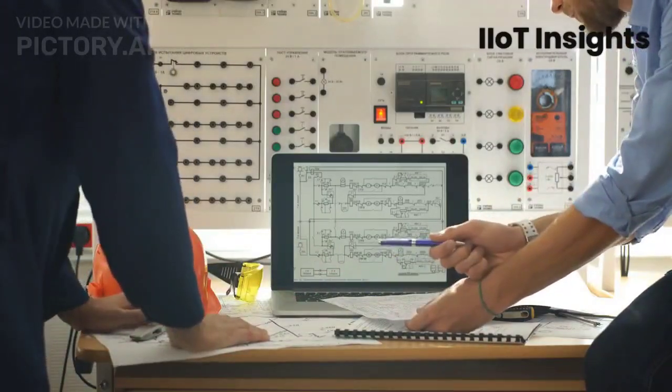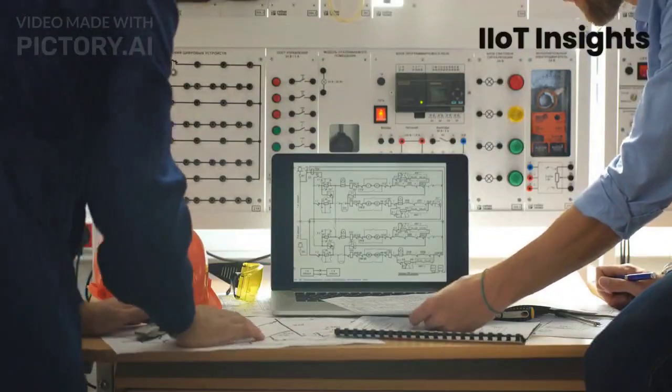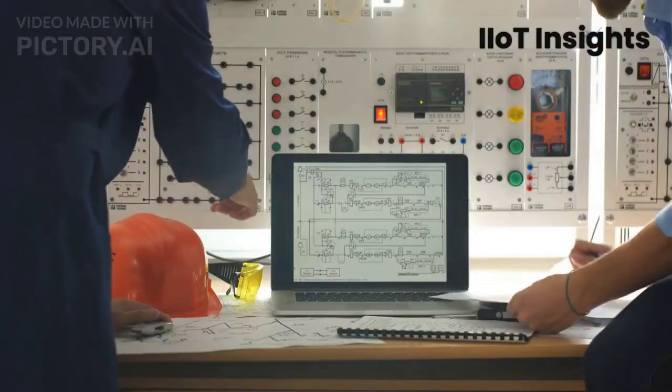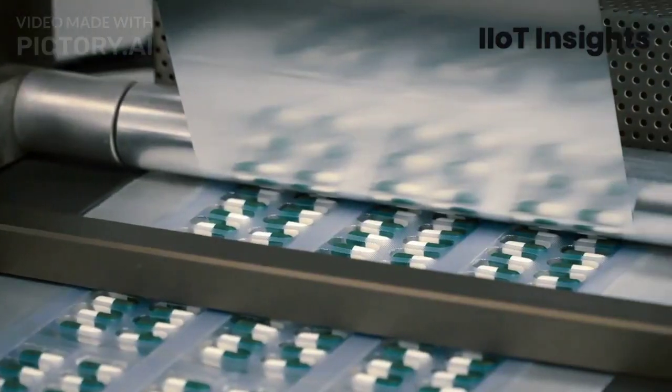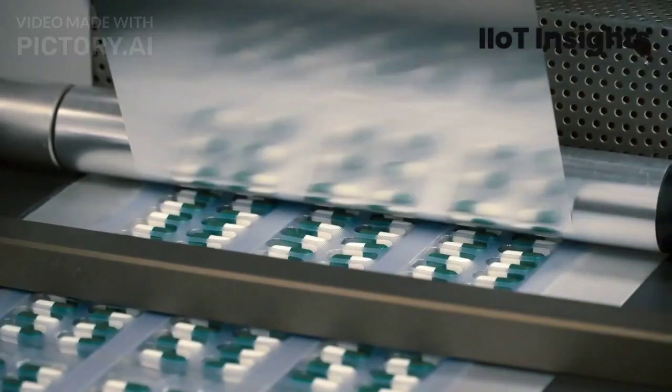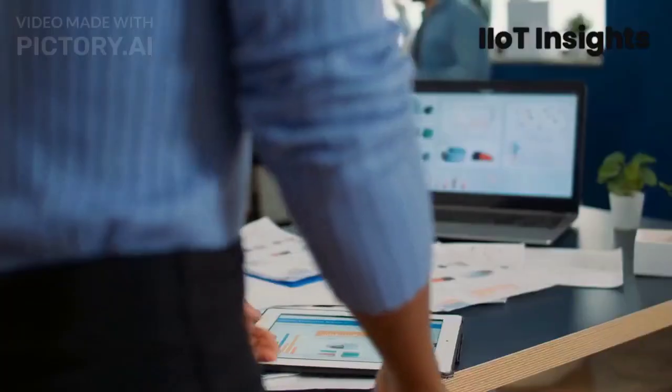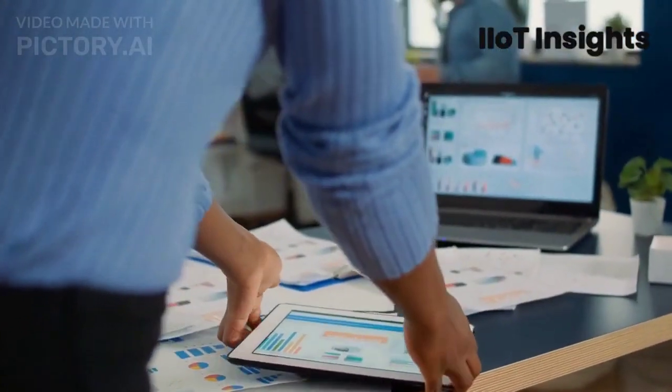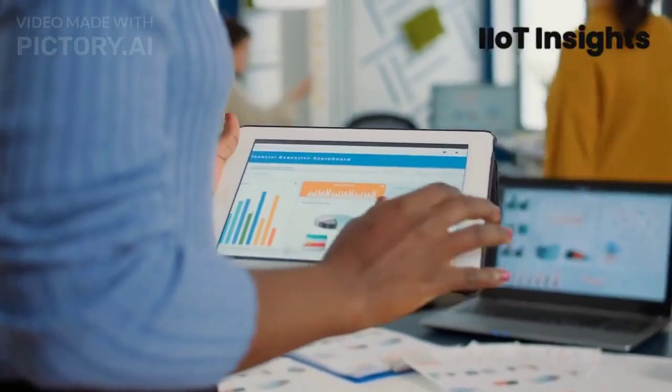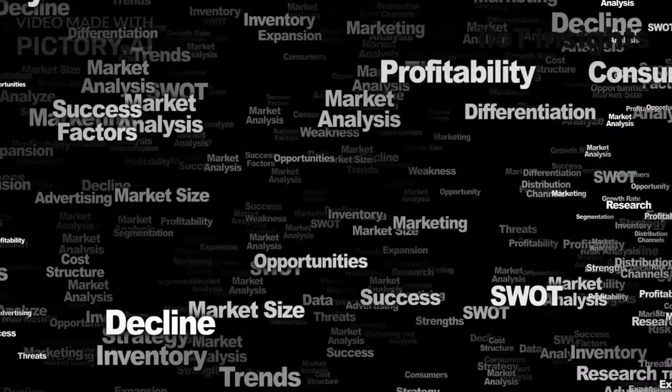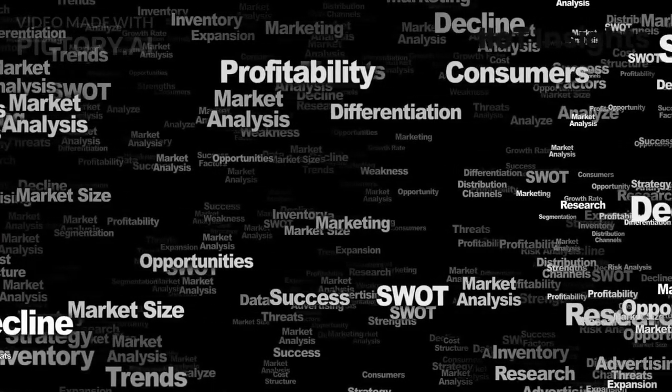If you are in the manufacturing industry, you know how critical it is to have an efficient and effective manufacturing execution system, or MES platform. An MES platform is a software system that helps you manage your manufacturing processes, from scheduling and production monitoring to quality control and maintenance. But with so many MES platforms available on the market, it can be challenging to know which one is right for your business. In this video, we'll discuss the key factors you need to consider when choosing an MES platform.